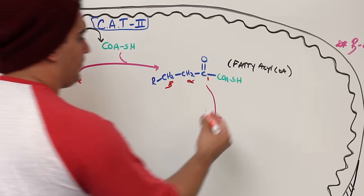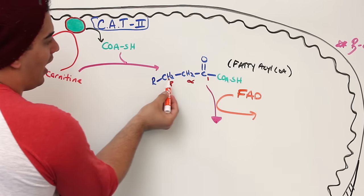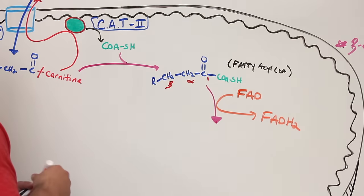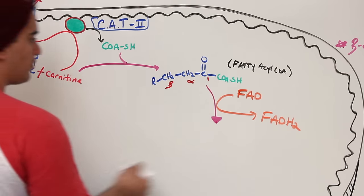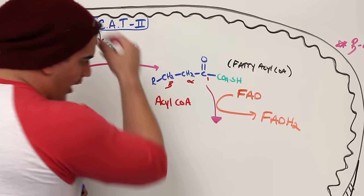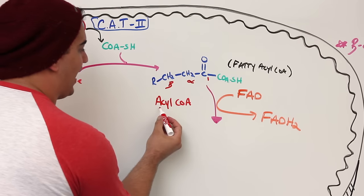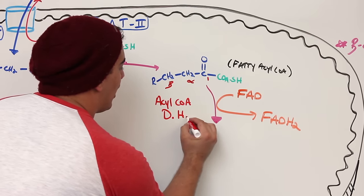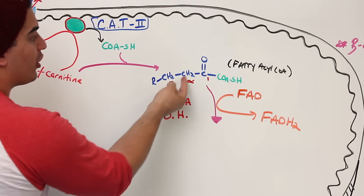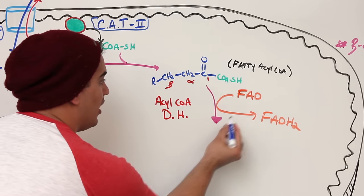FAD comes in and picks up a hydride from the alpha carbon and a hydride from the beta carbon, converting to FADH₂. The enzyme catalyzing this step is acyl CoA dehydrogenase. When those hydrogens are removed, a double bond forms between the alpha and beta carbons to stabilize the molecule.